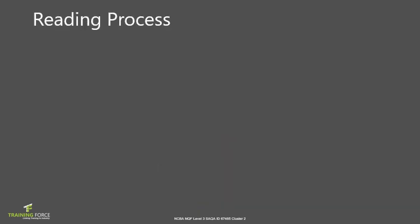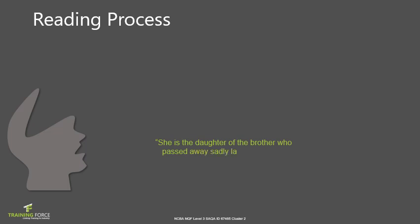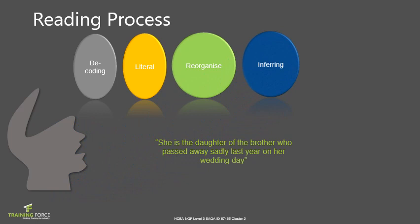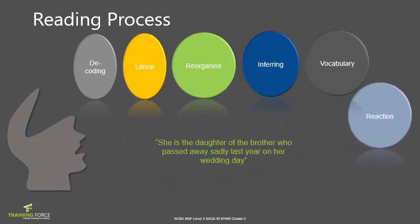When we read, there is a typical process that is followed. For example: 'She is the daughter of the brother who passed away sadly last year on her wedding day.' When we read, the following happens: the words are decoded — we analyze the words we are looking at. We look for an exact meaning, reorganize the words, then infer the meaning by conclusion. We check our own vocabulary, and then we react and evaluate the text to get an overall meaning of what it is actually saying.